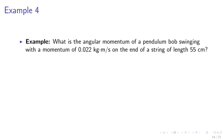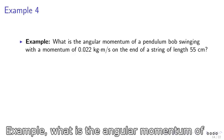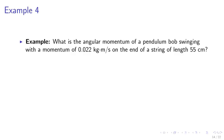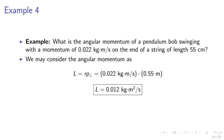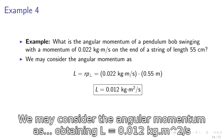Example 4. What is the angular momentum of a pendulum bob swinging with a momentum of 0.022 kg·m per second on the end of a string of length 55 cm? We consider the angular momentum as L equals R times P-perp, which equals 0.022 kg·m per second times 0.55 m, giving L equals 0.0121 kg·m squared per second.